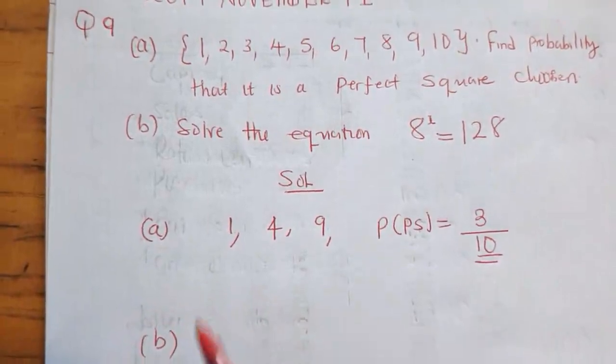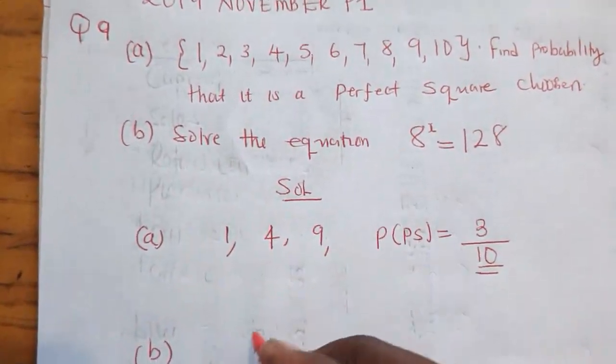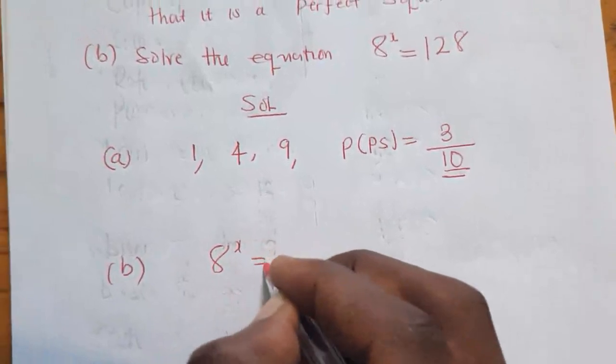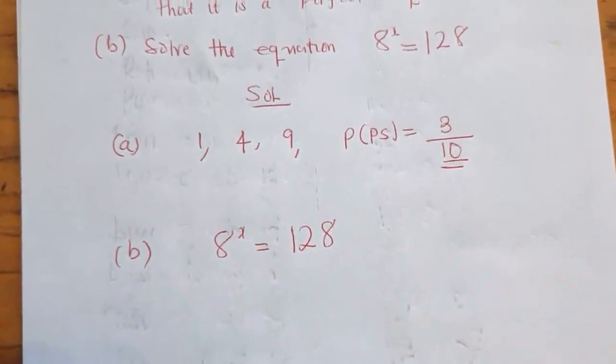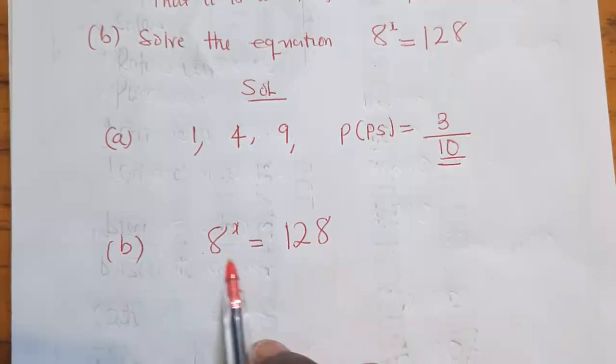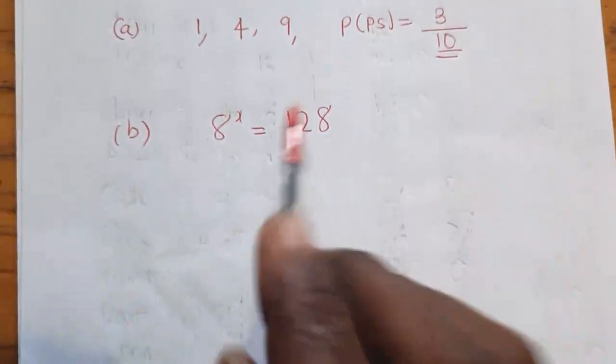And B says solve the equation 8^x equal to 128. Our main aim is to have the same bases here. That's our main aim, to have the same bases.